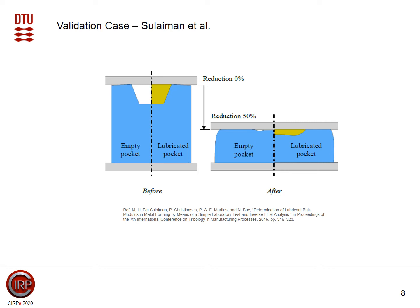They basically started compressing those pockets with and without oil. Without oil, the pocket is flattened entirely. With oil, the pocket is kept open. So in a real forming process with oil, we would see less flattening of the asperities, meaning also less friction.